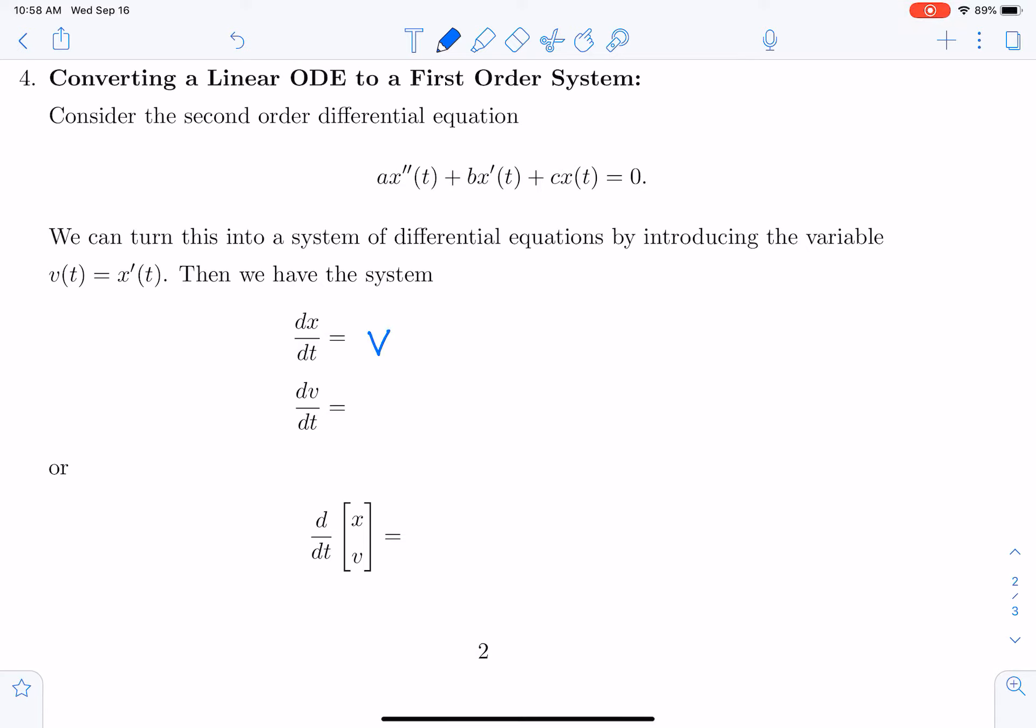Now if dx/dt is equal to V, then I can rewrite this equation as being plus B times V of t, plus C times x of t.